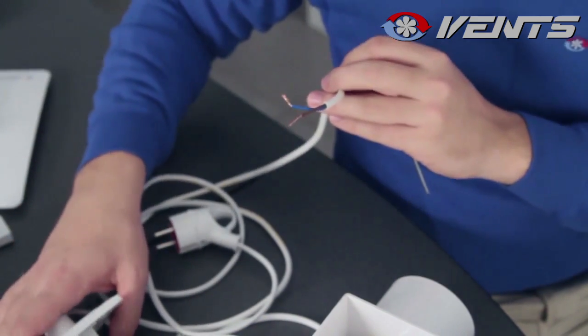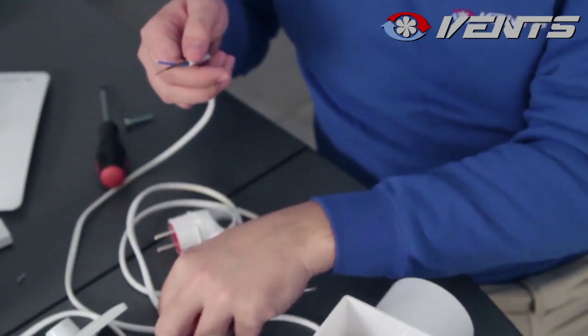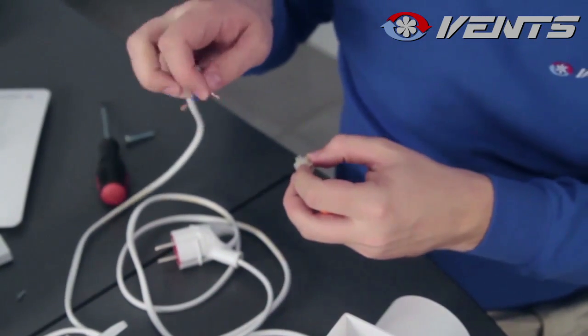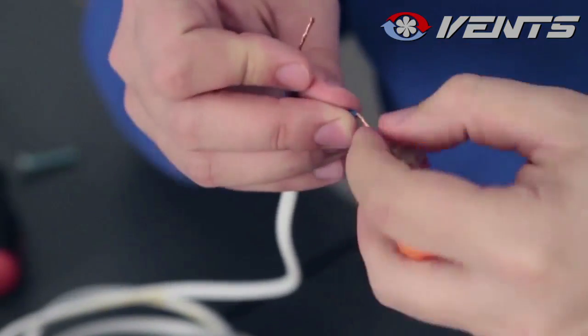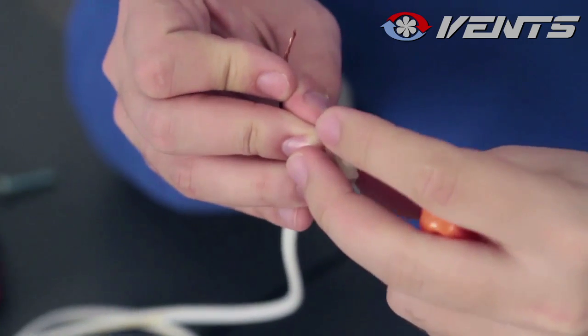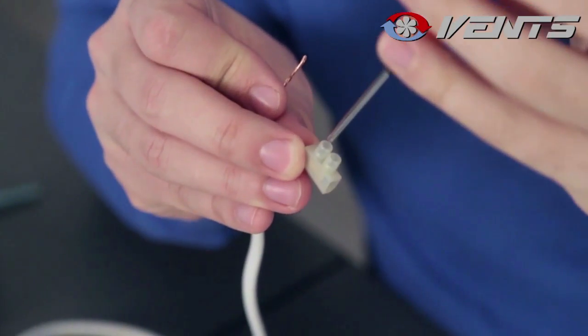The cable from the neutral terminal in the fan marked N, we will connect directly to the neutral wire from our house power supply. We use a small terminal block to connect these two wires.